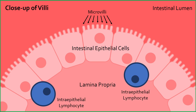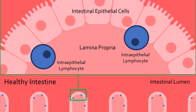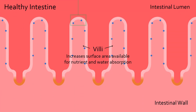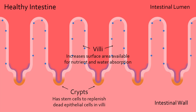There are also immune cells called intraepithelial lymphocytes, which hang out between the epithelial cells and kill any infected or unhealthy cells. Zooming back out, we can see that between these villi are indentations called crypts, which play a role in replenishing dead epithelial cells.